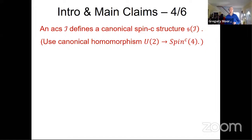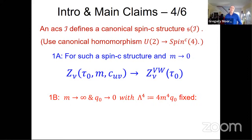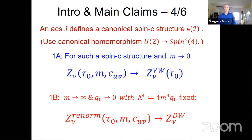To make the next claims, recall that an almost-complex structure defines a canonical spin-C structure. An almost-complex structure is equivalent to a reduction of structure group of the tangent bundle to U(2), and there's a canonical homomorphism of U(2) into Spin-C(4). When we make such a choice of UV spin-C structure and take the mass to zero, we recover exactly the Vafa-Witten invariants. On the other hand, if we take the mass to infinity and Q0 to 0 holding M to the fourth times Q0 fixed, a suitably renormalized version becomes the generating function of Donaldson invariants.